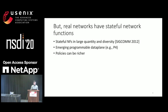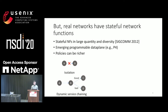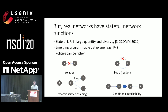On a stateful network, people care about much richer policies, such as isolation where packets from NFA cannot reach NFB, and dynamic service chaining where packets from A should always be sent to B, but only packets detected as malicious by B should be sent to D. There are many other interesting policies on stateful networks.